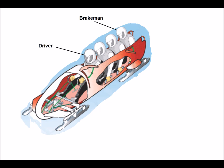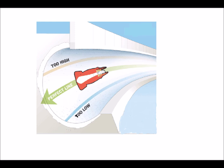After the push-off, the driver must choose a path down the run very carefully. Steering too high on a curve adds to the total distance the bob has to travel, making the trip take more time. A driver who steers too low loses the advantage of centrifugal force that keeps the bob going during banked curves.